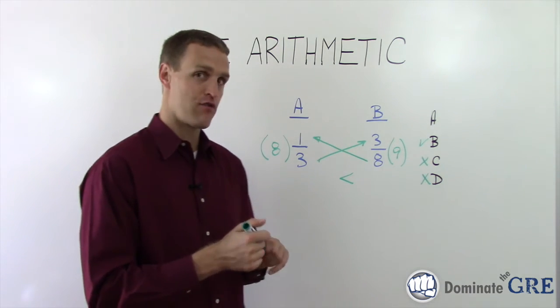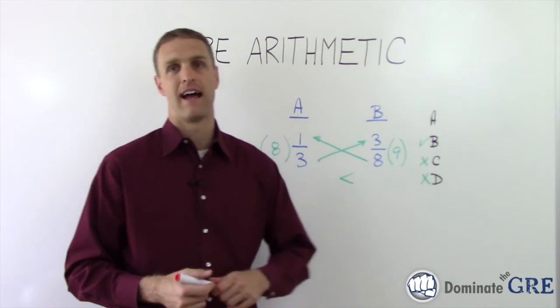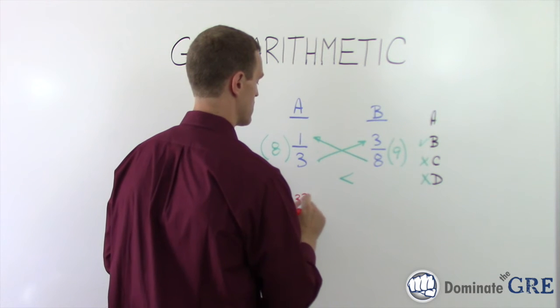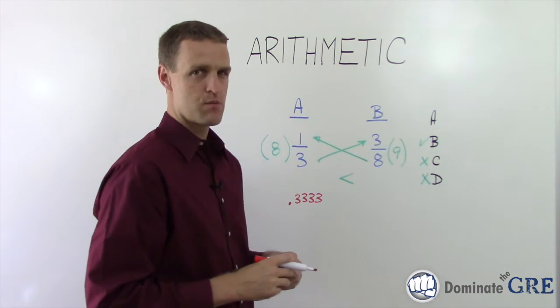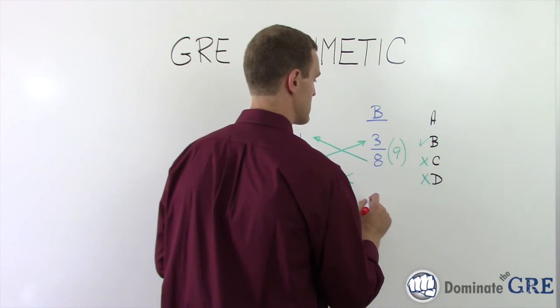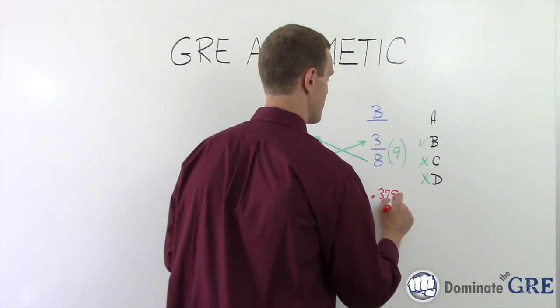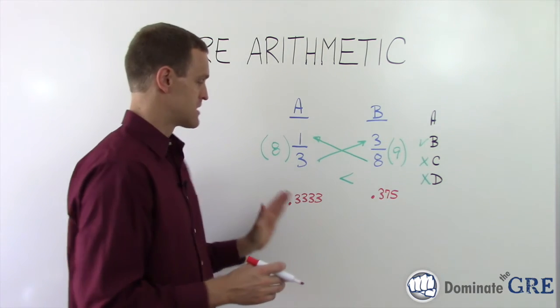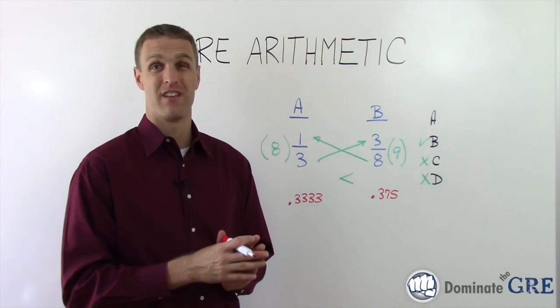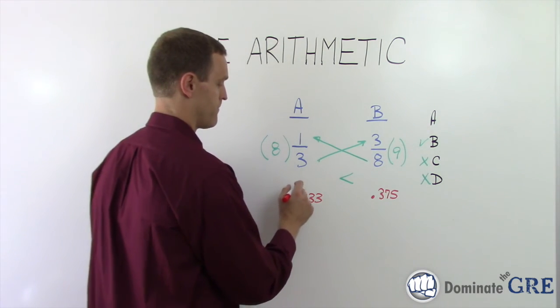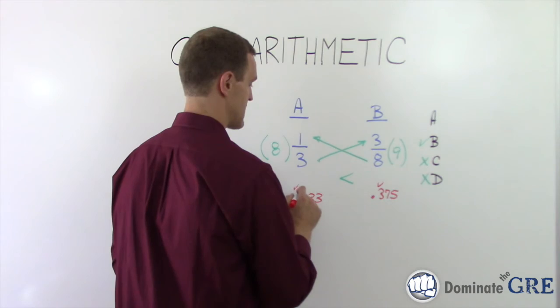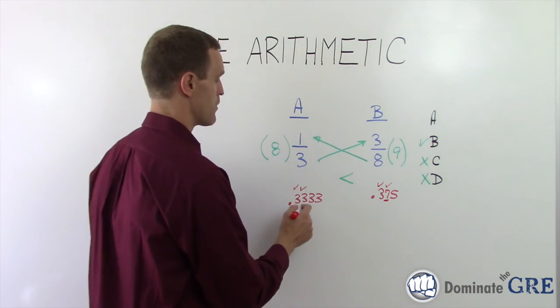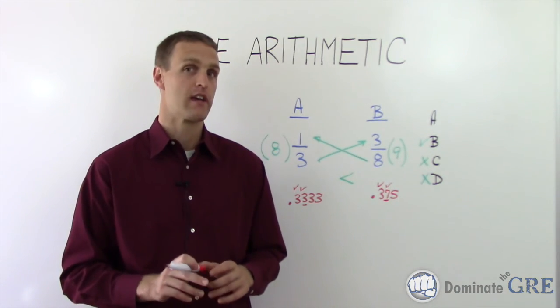Now you could also always convert fractions to decimals. A lot of students find it easier to compare decimals. So if instead this had been expressed as 0.3333 and three-eighths is expressed as 0.375, it's a lot easier to compare decimals. If you can put a fraction in decimal form, you simply work left to right until you get to a number that's different. So in this case, the threes are the same. In this case, I have a three. In this case, I have a seven. This one's bigger because that next number seven is bigger than this next number three. So that's how you simply compare when you're looking at decimals.